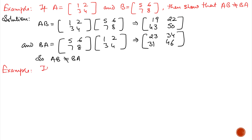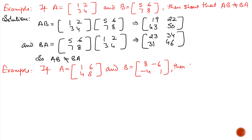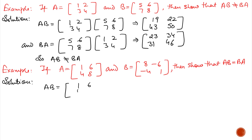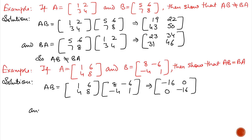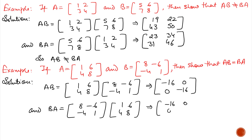Next example: if A is 1, 6, 4, 8 and B is 8, −6, −1, 1, show that AB equals BA. Calculating AB gives −16, 0, 0, −16. Calculating BA also gives −16, 0, 0, −16. Therefore AB equals BA.